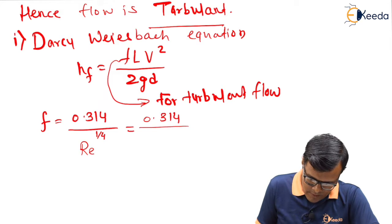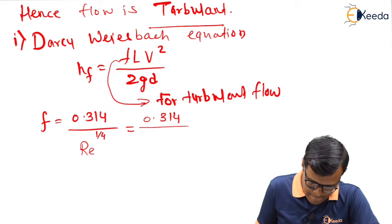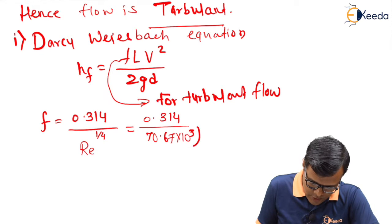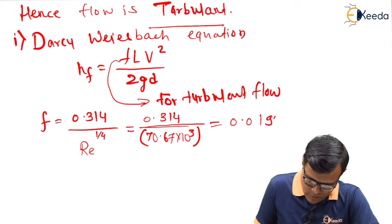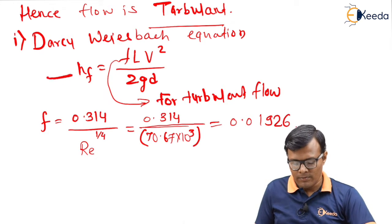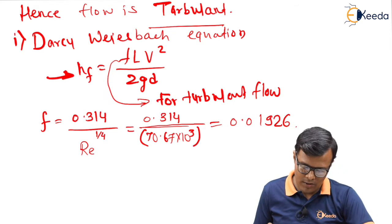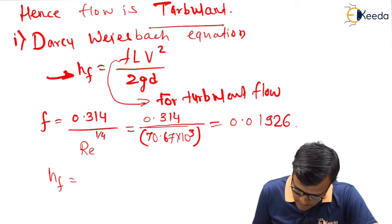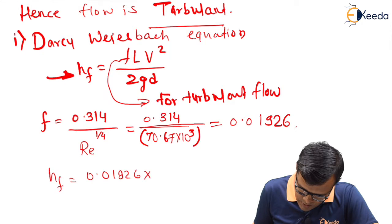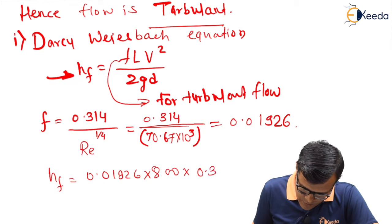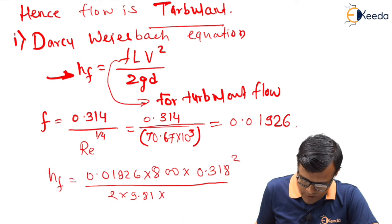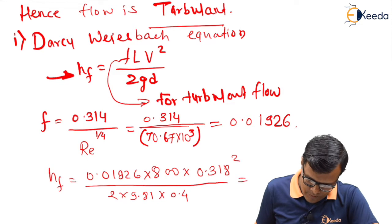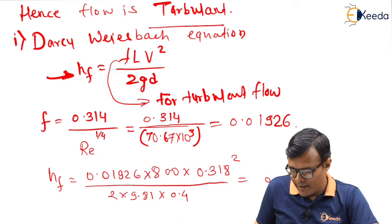0.314 divided by 70.67 × 10³ to the power 0.25, that is equal to 0.01926. In this term hf, we have known all the formula terms. We can find out hf value is f is 0.01926, length is 800, V is 0.318, V² means 0.318² upon 2 × 9.81 × D value is 0.4. So it is 0.0277. Its unit will be obviously in meters.